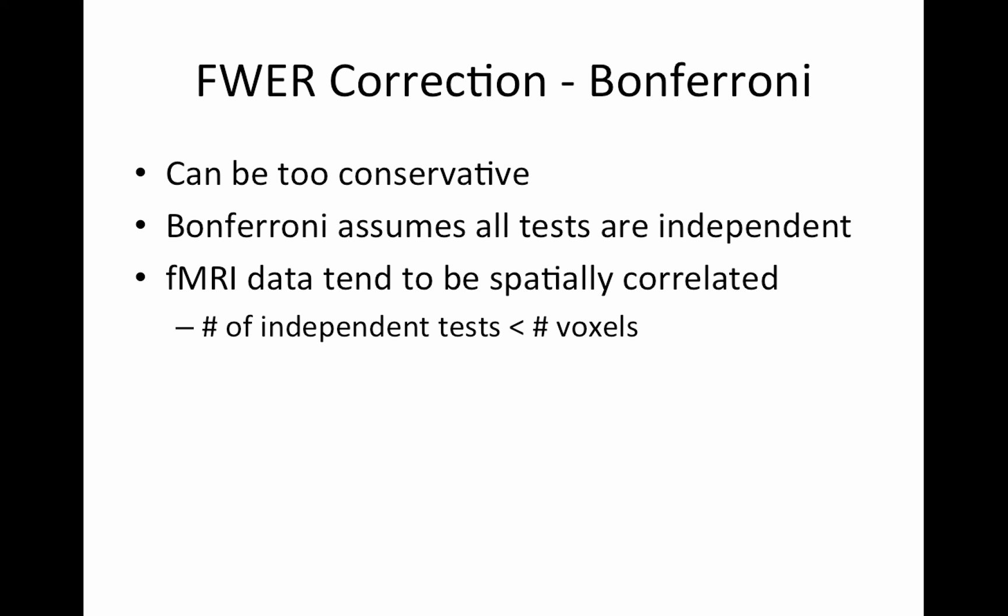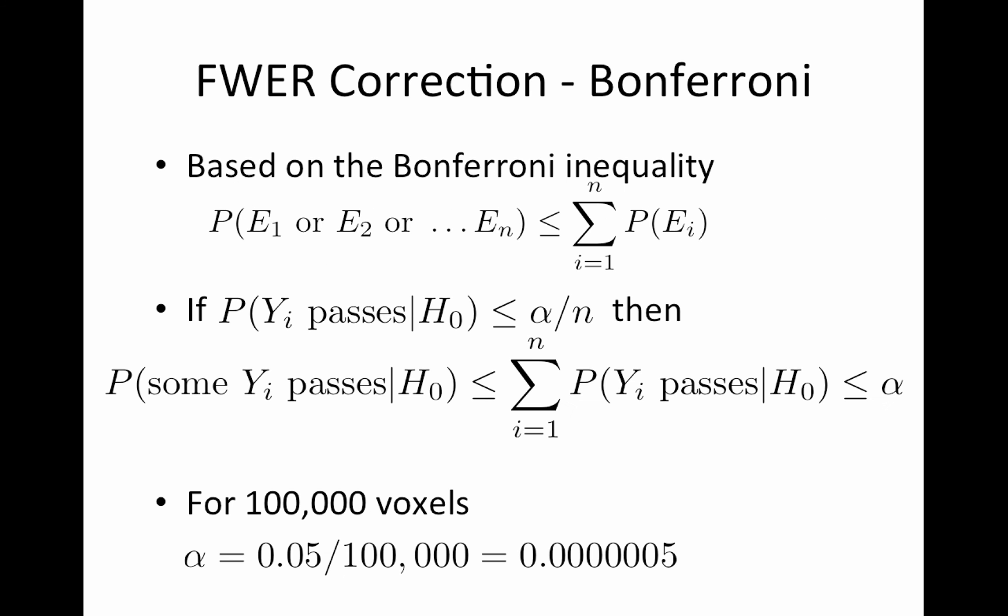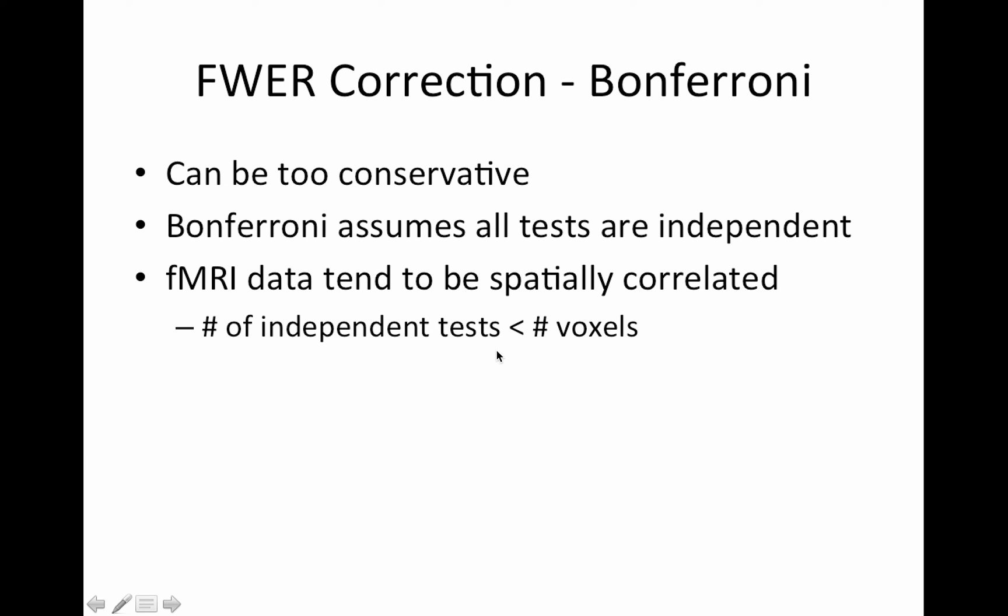Bonferroni can be too conservative because it assumes all of our tests are independent. Our data are not. Our voxels are spatially correlated. So the number of independent tests is smaller than the number of voxels. If we have 100,000 voxels but in reality maybe there are only 50,000 independent tests, then we're being too stringent. Unfortunately, we can't figure out this number of independent tests. It's very tricky.